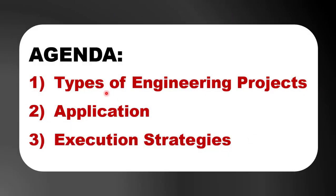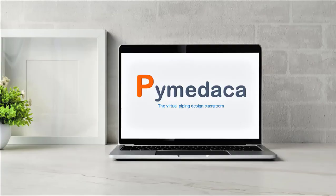Let's go through the agenda of this video. First, we will discuss about the types of engineering projects that are executed for the development of process plant engineering, and what are the applications in terms of when and where which types of engineering are actually used based on the types of projects. And the last one is engineering execution strategies — where you have to use each particular strategy. These are the three important areas we are going to cover.